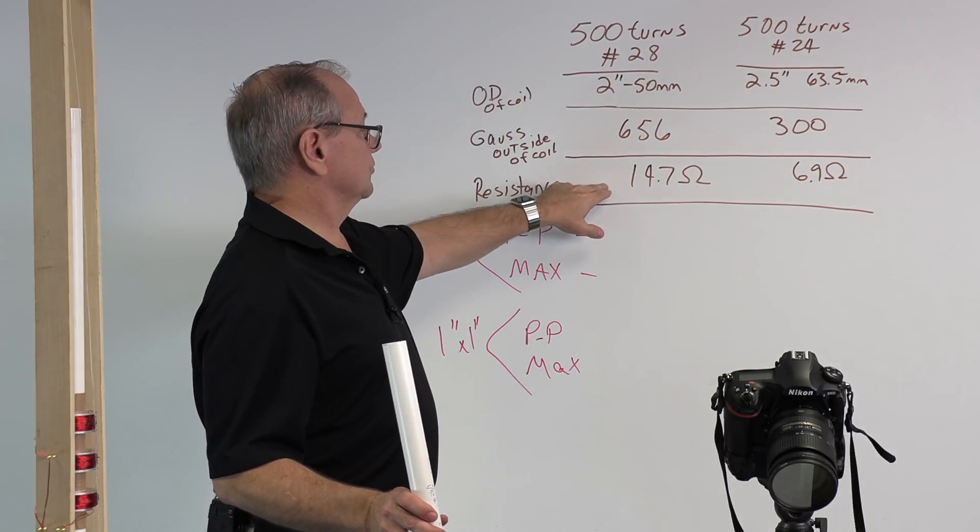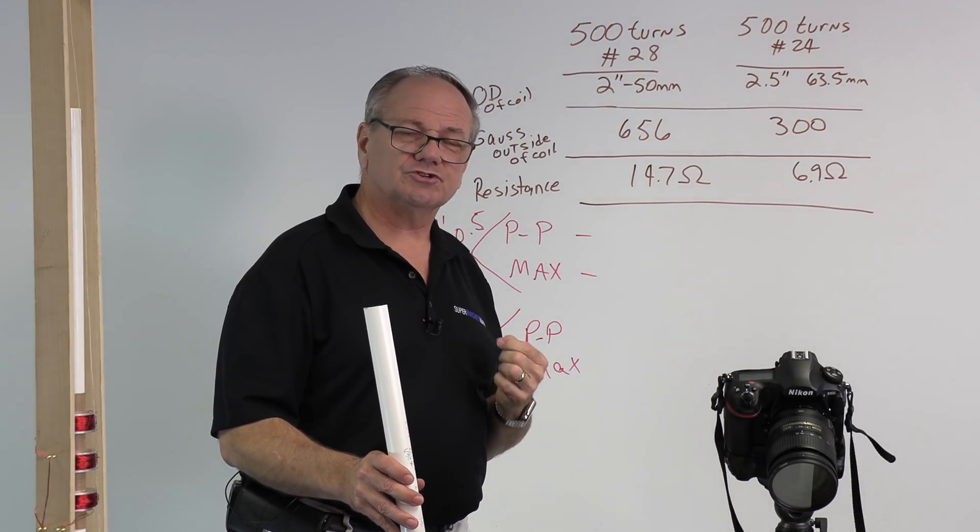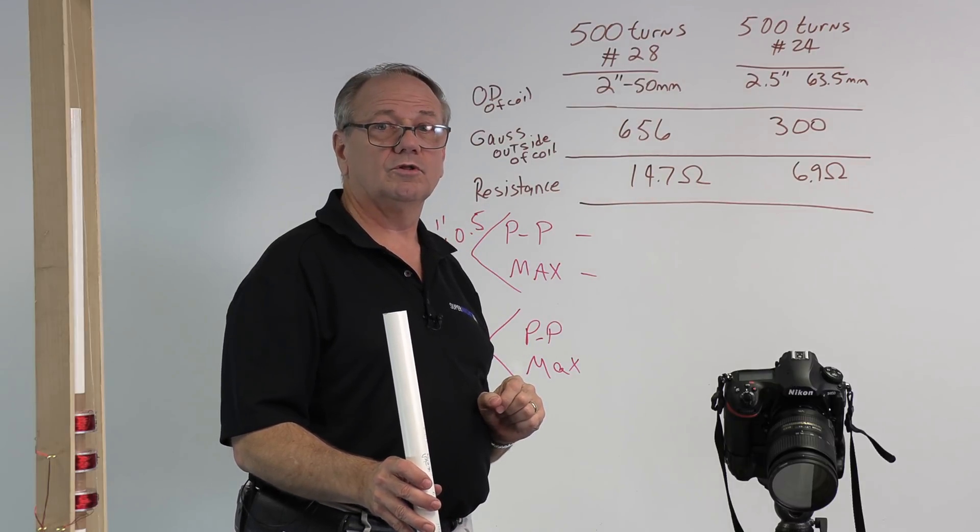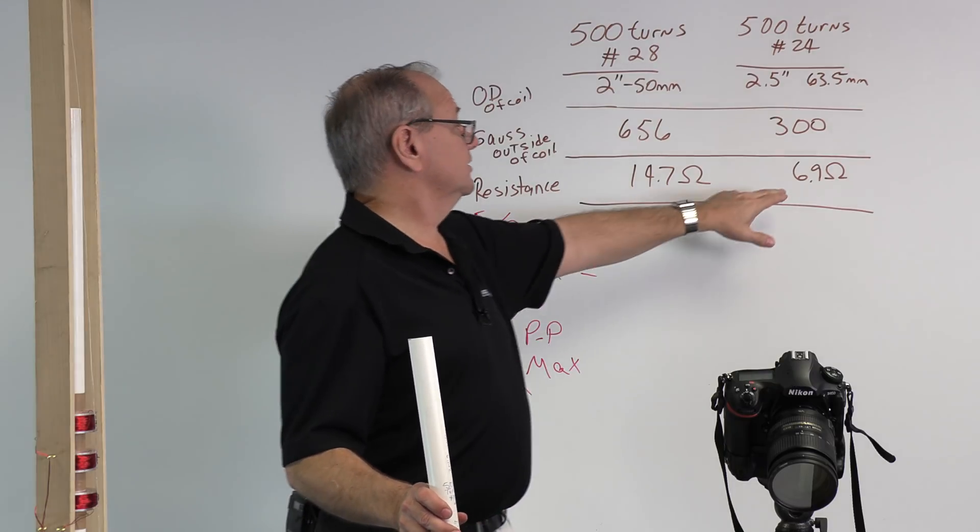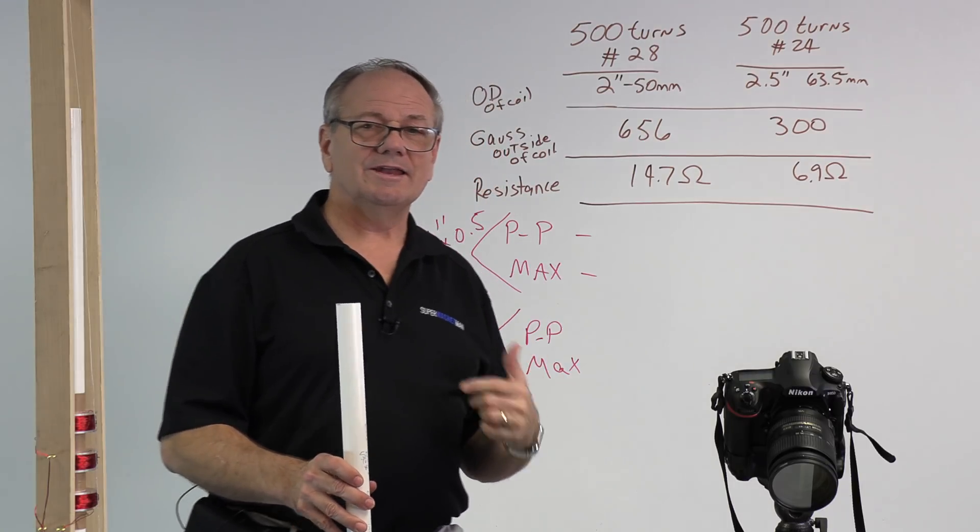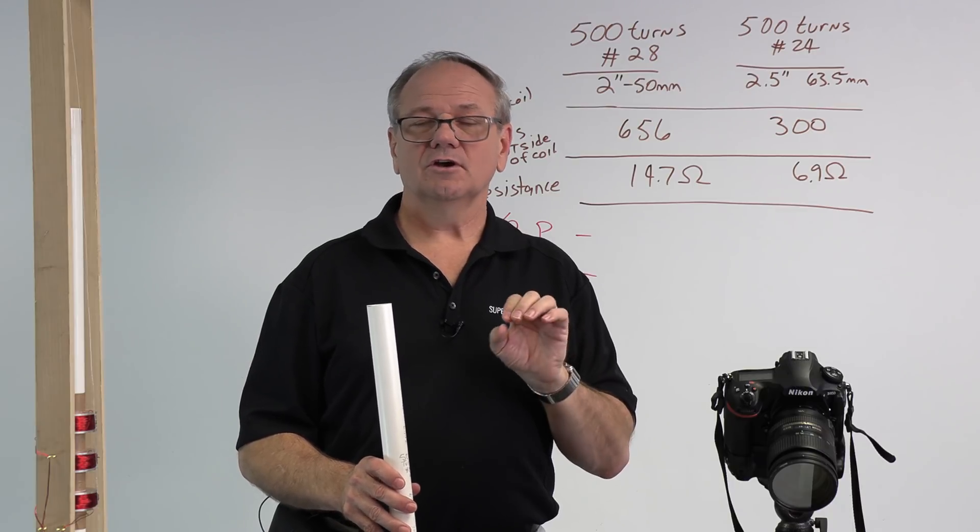Then we looked at the resistance of the coils. The 28 gauge has a higher resistance. It's a smaller diameter, so its resistance was 14.7 ohms for the coil, whereas the 24 gauge is 6.9 ohms. So you have a different resistance. Now we're going to take a look at how this impacts what we see on the screen.